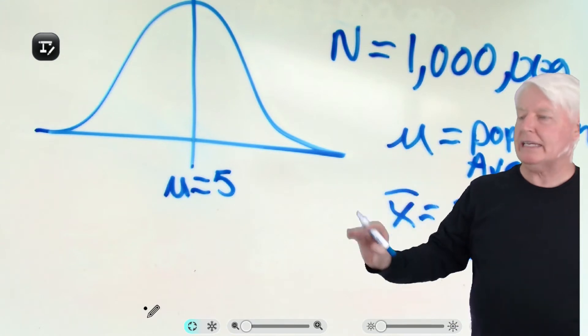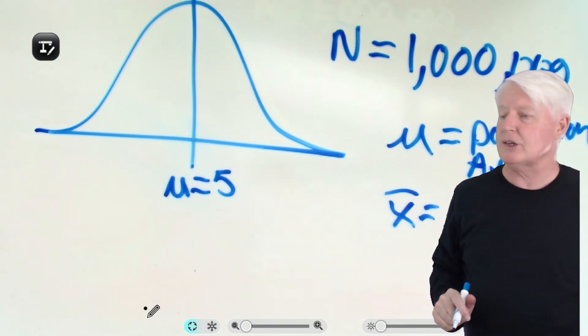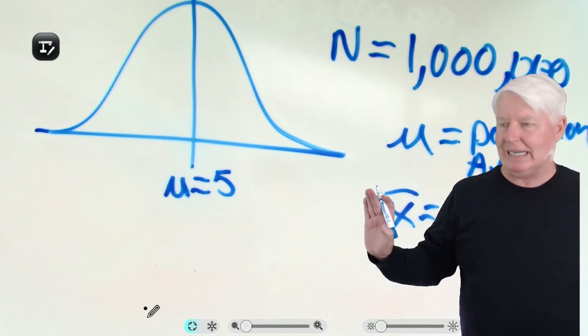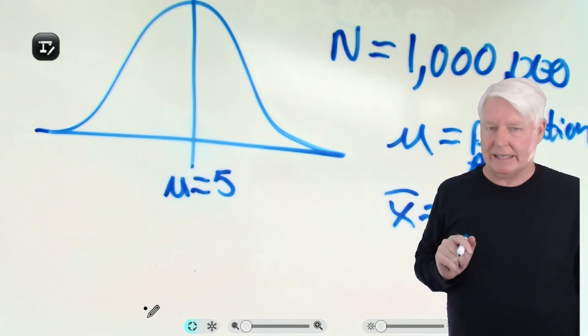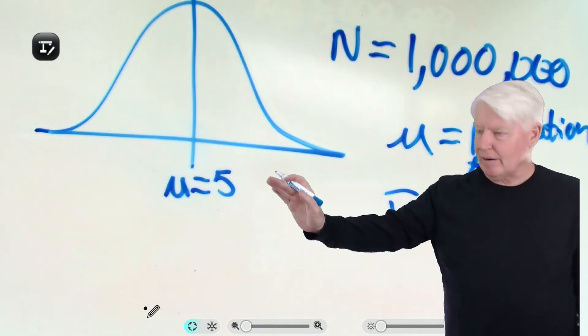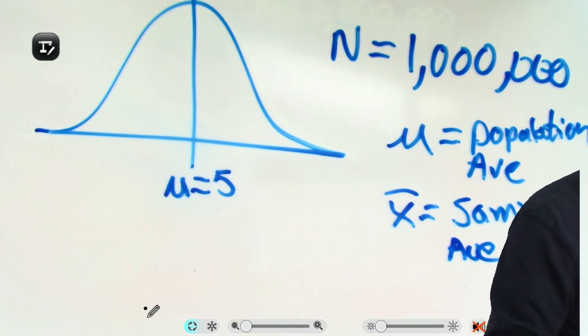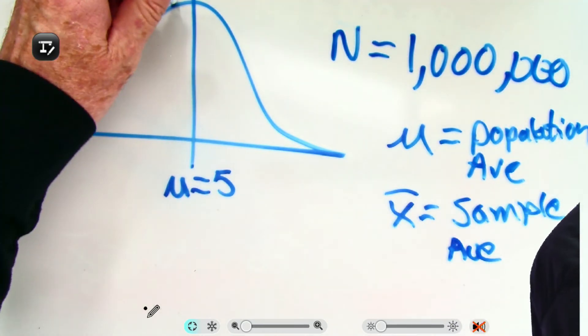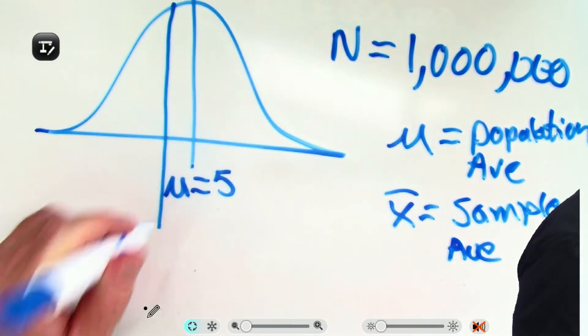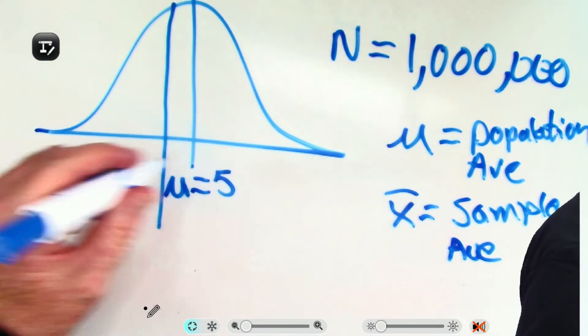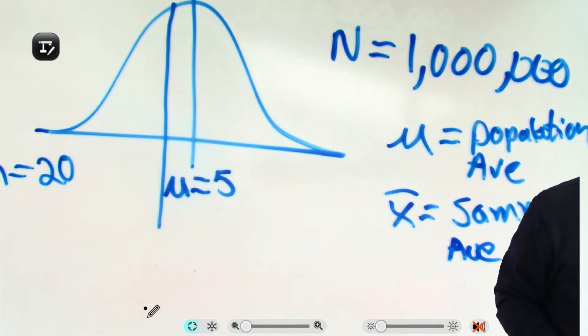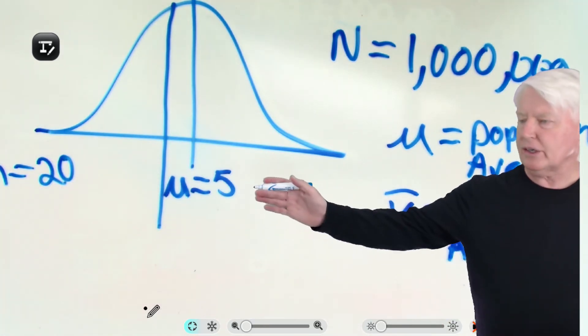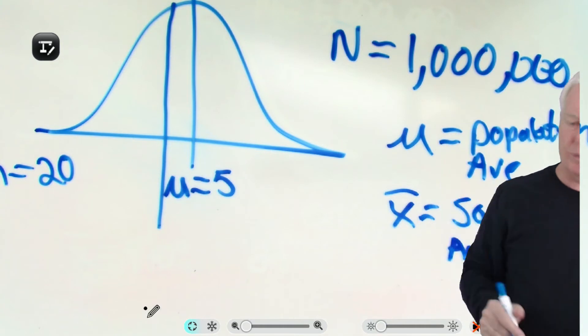Someone else comes along and says, I need to know the average of this population, but I don't have time to measure all million parts. So I'm going to estimate the average, the population average, by using a sample. And this is a randomly selected sample. Let's say it is a sample size of 20, just for sake of argument. So you're just taking 20 out of this million.